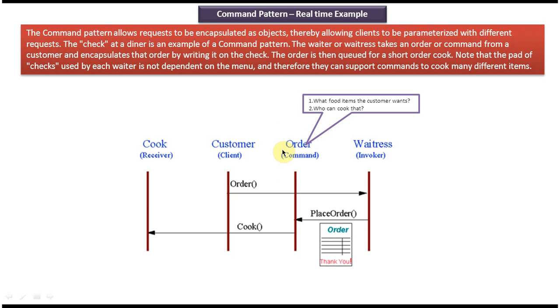And waiter is an invoker. So waiter doesn't know how to cook the food, okay? He will just pass the request to the receiver. So here receiver is nothing but cook, who will cook the food and give it back to the waiter, and waiter will give it back to the customer.